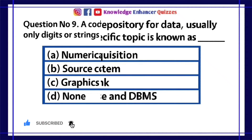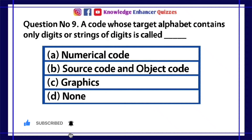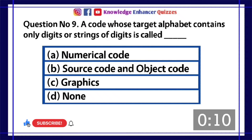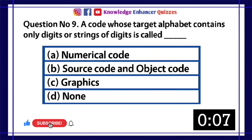Question number 9. A code whose target alphabet contains only digits or strings of digits is called dash. A. Numerical code. B. Source code and object code. C. Graphics. D. None.